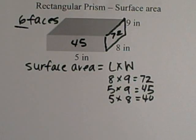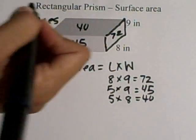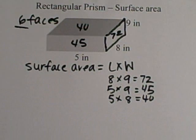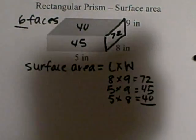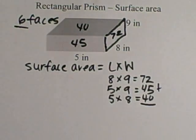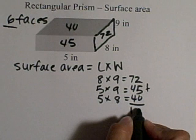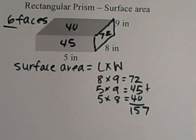So now I've solved for 3 faces—one, two, three—and I have the area of each. The next step that I'm going to do is I'm going to add all of these together so I can get the total area of these 3 faces. So I'm going to add 72, 45, and 40, and I get 157.